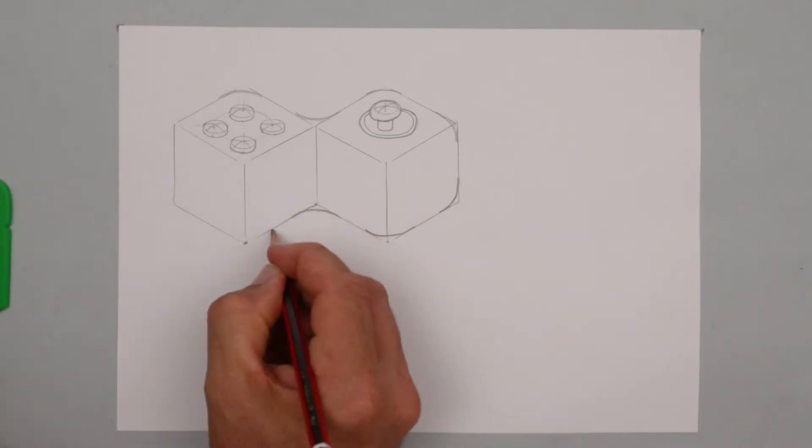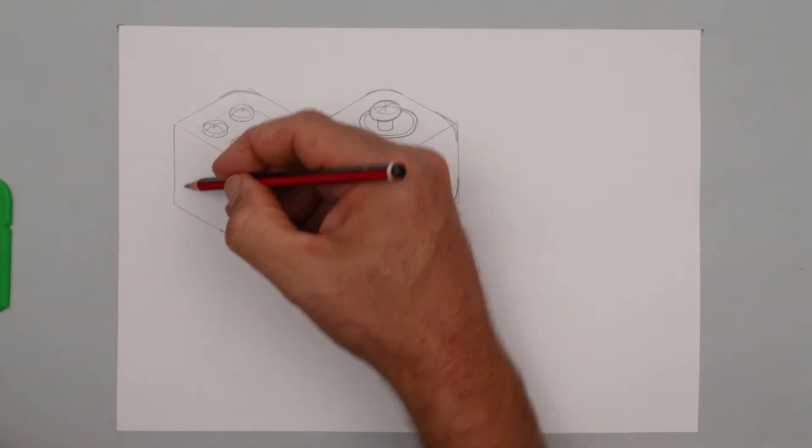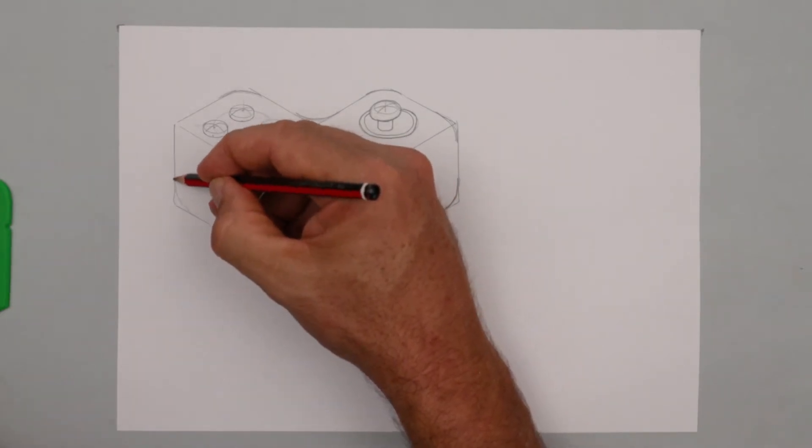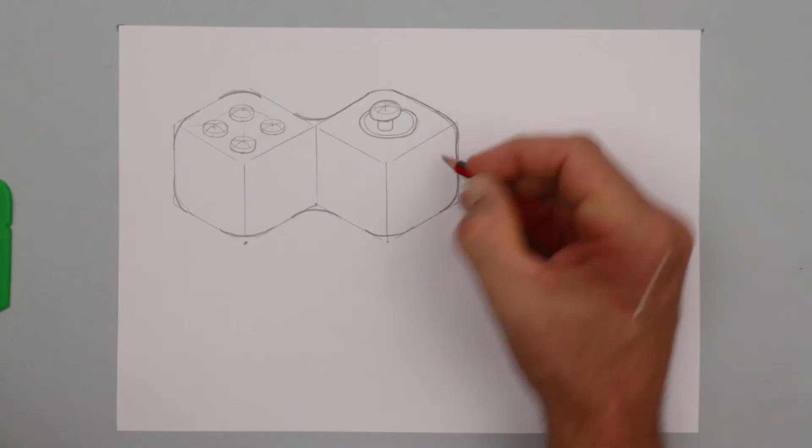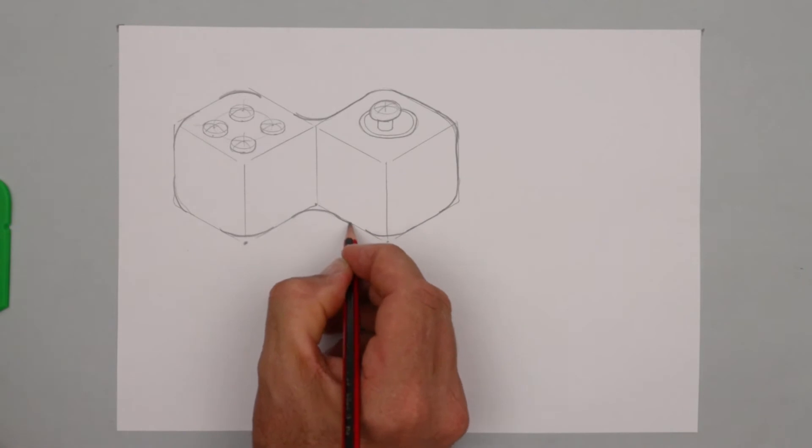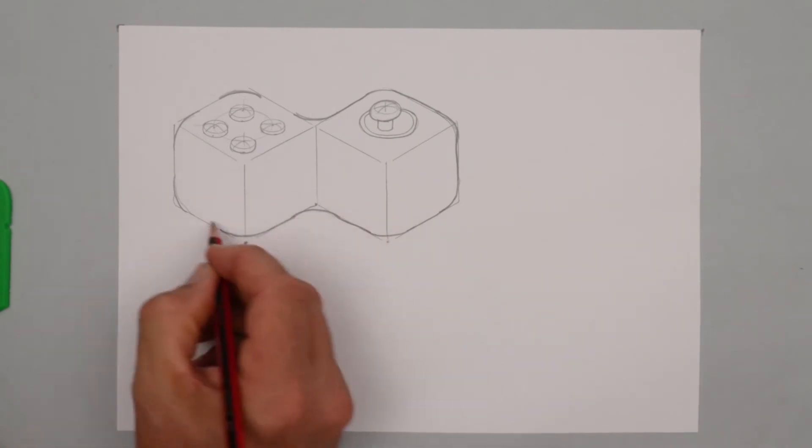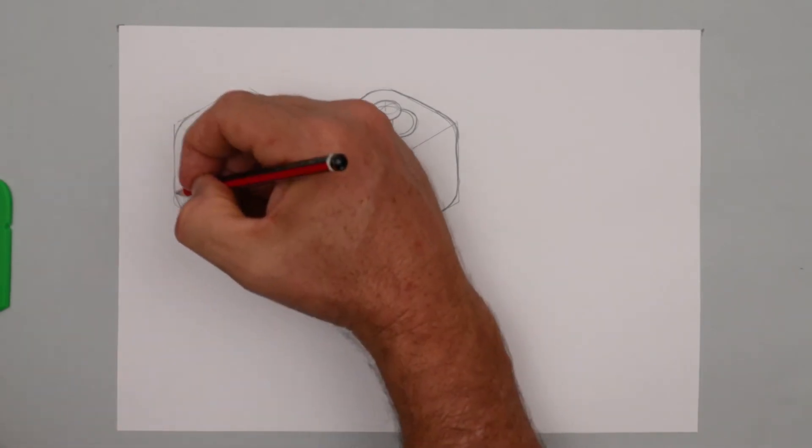So I'm rounding all that off but not so much that you can't see that the concept's based on my two cubes. Once you've rounded off all the corners then come back with a nice neat line and firm in. You can use a ruler if you want but why not have a go at freehand.